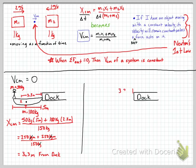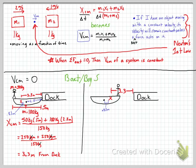If the person walks across the boat to the other side, the position of center of mass of the system has not changed — it remains 3.3 meters from the dock. There is a distance of 0.83 meters between the center of mass of the boat-buoy system and the center of mass of the boat itself, and that same 0.83-meter relationship holds after the person moves.